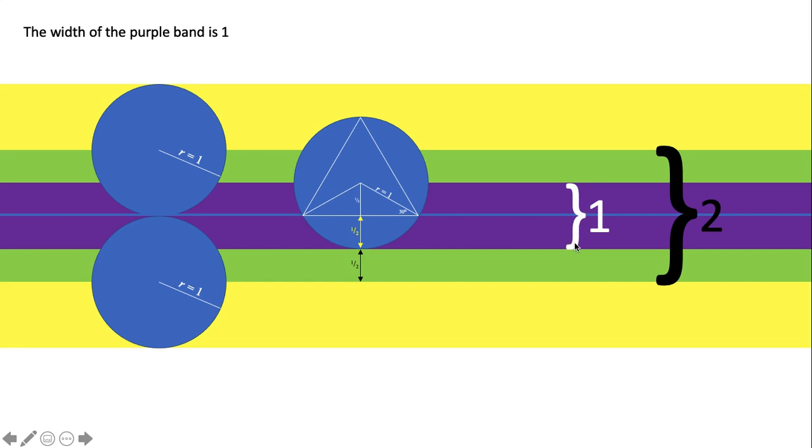So the probability of the chord being longer than the base of the triangle is one out of two. And that's how I saw it.